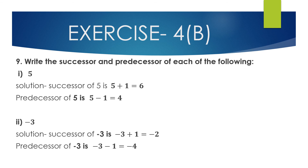Question 9: Write the successor and predecessor of each integer. The successor is the next number (add 1) and the predecessor is the previous number (subtract 1). First: integer 5. Successor of 5 = 5 + 1 = 6. Predecessor of 5 = 5 − 1 = 4.